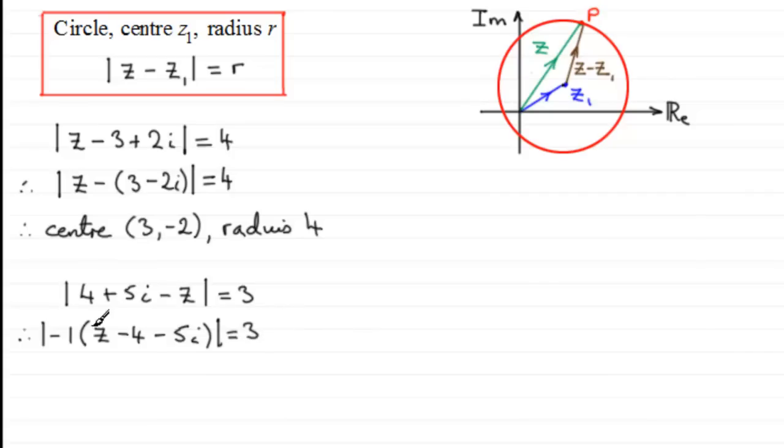Now, what I can think of this as, as being exactly the same, because I've got a product here, as the modulus of minus 1 multiplied by the modulus of Z minus 4 minus 5i. And that equals 3. Now, the modulus of negative 1 is 1. So I can just think of this then as the modulus of Z minus, and then I need to rewrite this in brackets as 4, and then plus 5i. So I've now got it in the correct format.